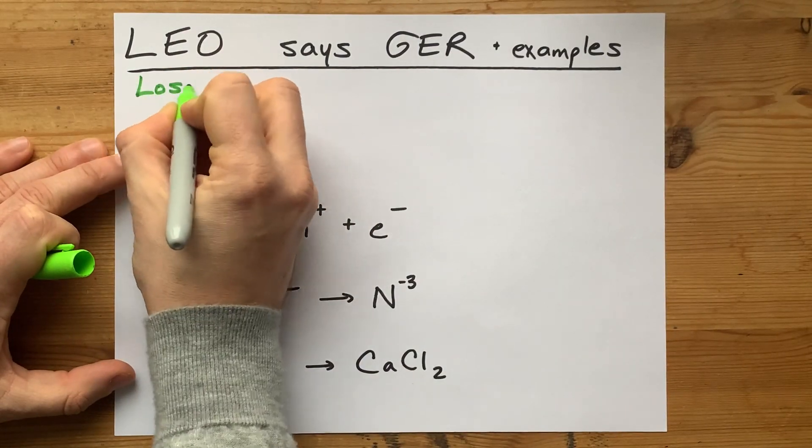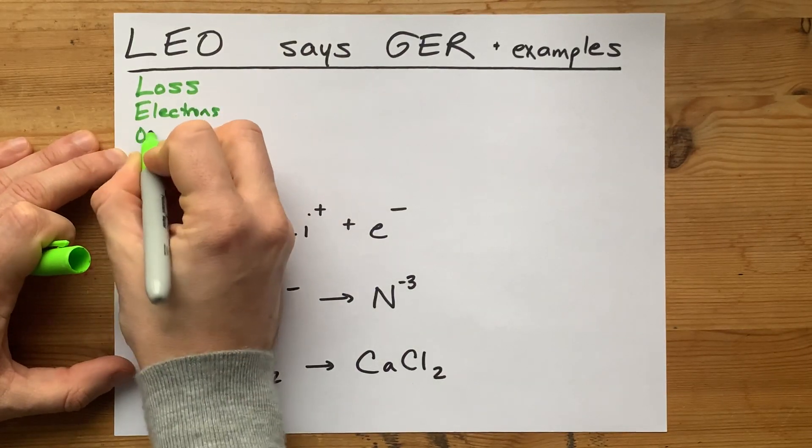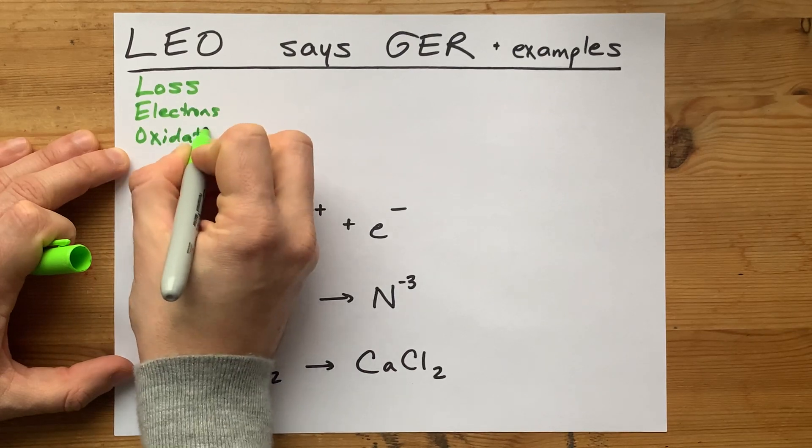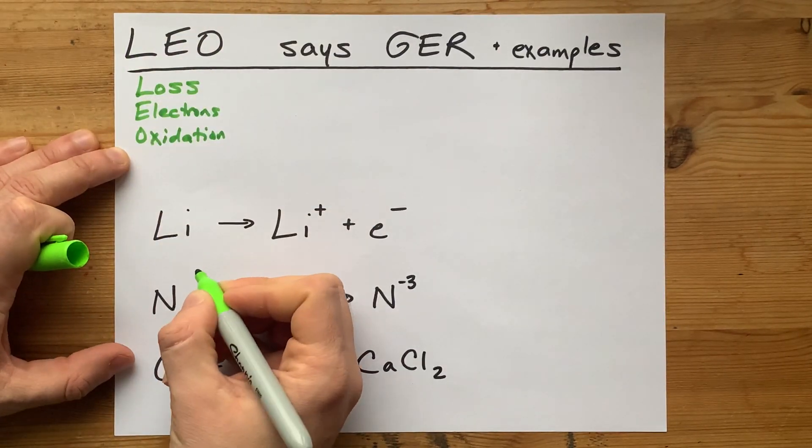LEO stands for loss of electrons is oxidation. See how loss starts with L, electrons starts with E, O is for oxidation.